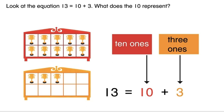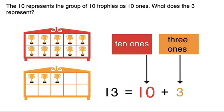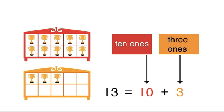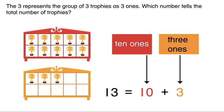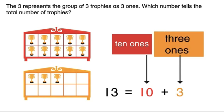Look at the equation 13 equals 10 plus 3. What does the 10 represent? The 10 represents the group of 10 trophies as 10 ones. What does the 3 represent? The 3 represents the group of 3 trophies as 3 ones.